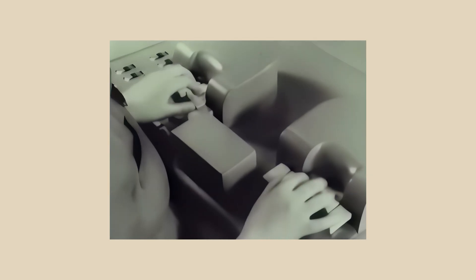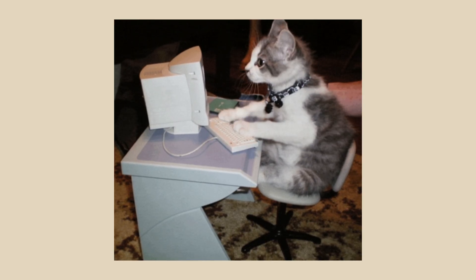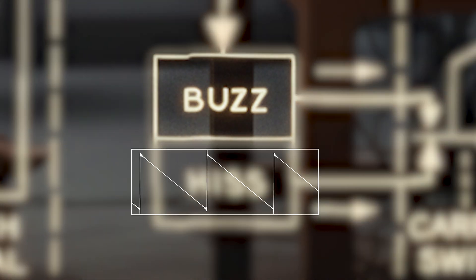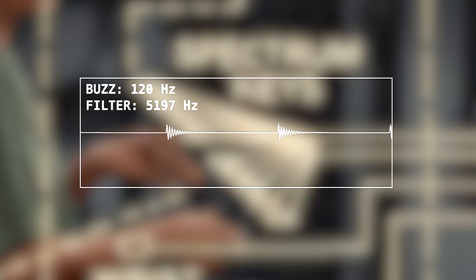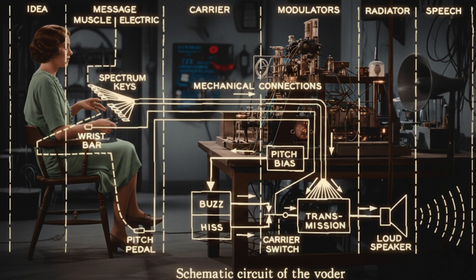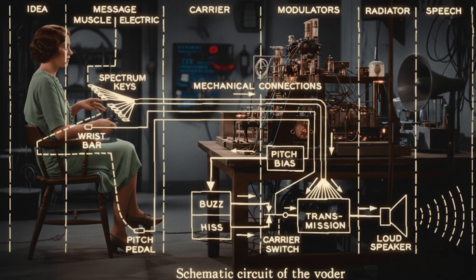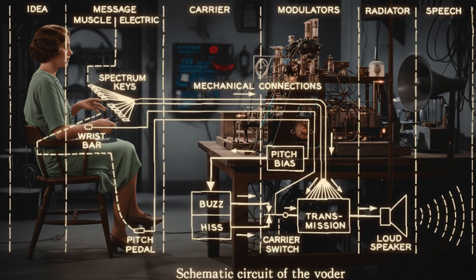Each sound, each word, was shaped in real time by a skilled operator. Only a few dozen ever mastered it, known as the legendary Voter Girls. Why was it only women? The reason isn't clear, but I'd love to hear your thoughts in the comments. The Voter recreated how humans speak — electronically. It began with a sound source: a buzzing tone for voiced sounds, or a hiss for unvoiced ones. This raw energy passed through ten filters spanning roughly 0 to 7,500 hertz, each shaping a specific range of frequencies, much like the human mouth and throat form resonances. Pitch was controlled by a foot pedal, and a wrist bar on the side panel switched between buzz and hiss. It was speech played like music — mechanical in sound, but deeply human in touch.